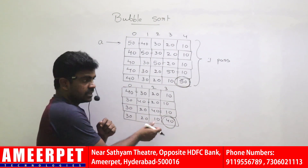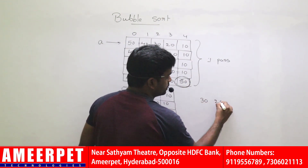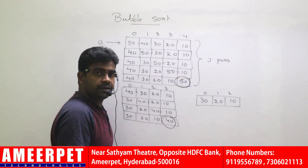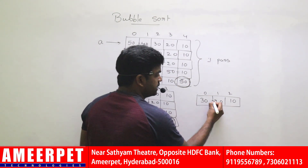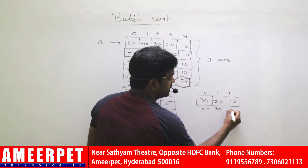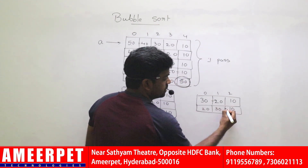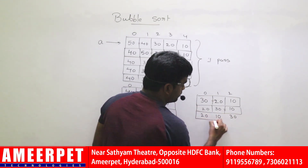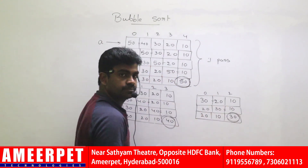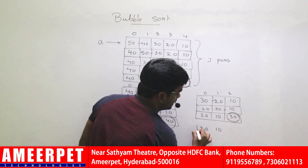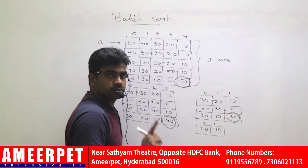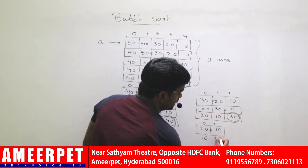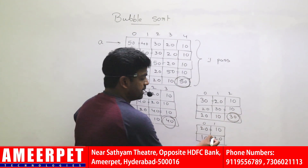Next, three elements remain: 30, 20, and 10. If three elements are present, only two comparisons are required. 30 and 20 compare, value becomes 20 and 30. Then 30 and 10 compare, values become 10 and 30 — the highest element has bubbled. Now only two elements remain: 20 and 10. Only one comparison is needed: 20 and 10 become 10 and 20. The highest element, 20, is bubbled.